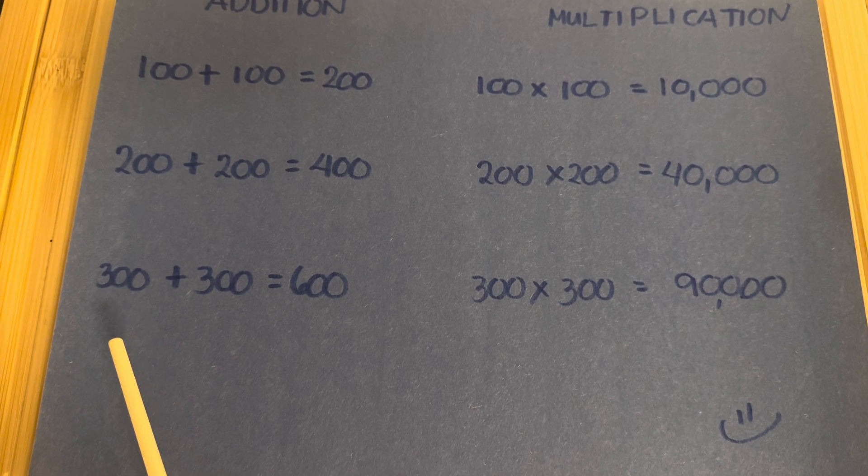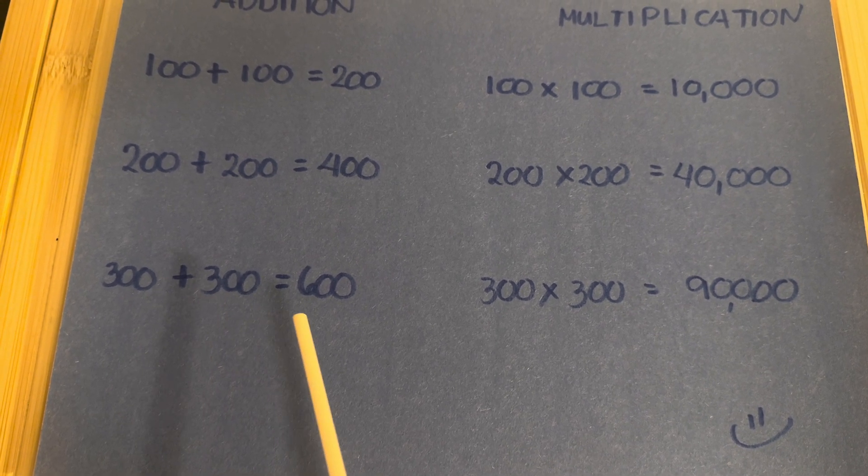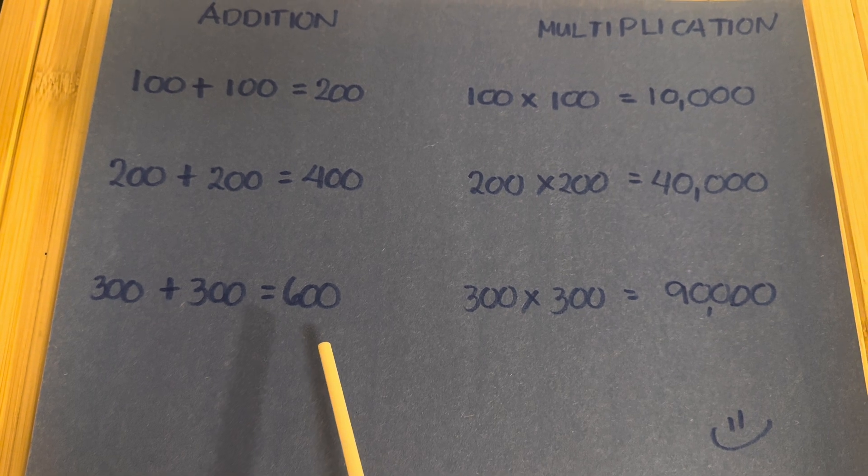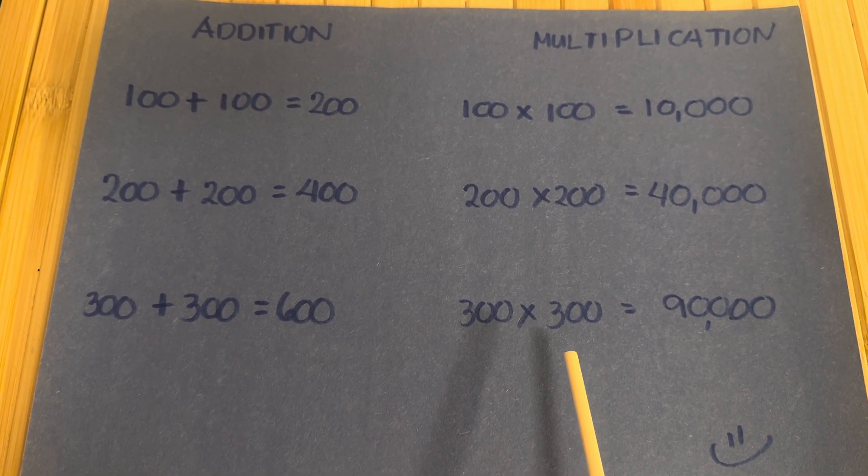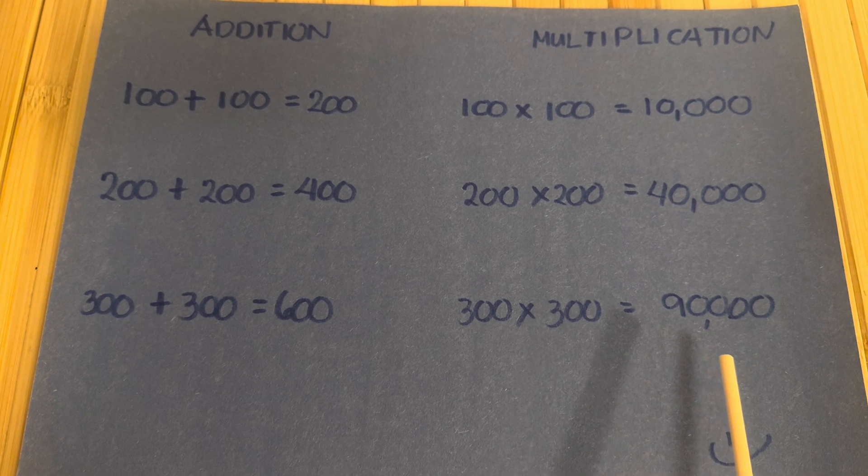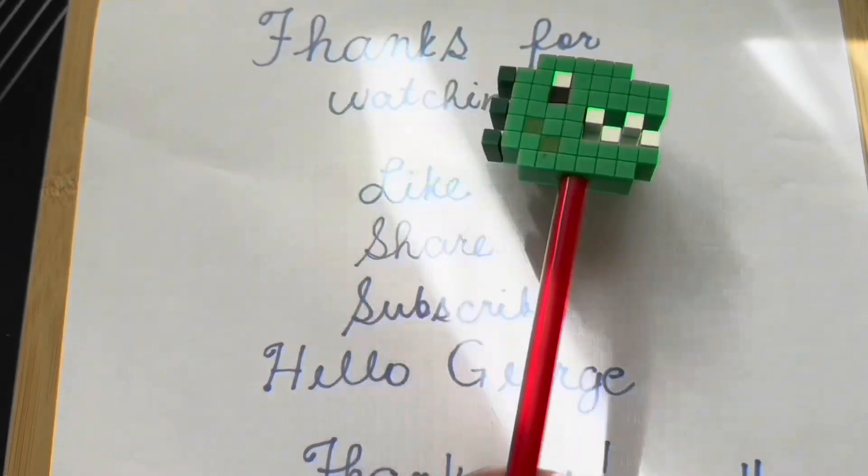And lastly, 300 plus 300 equals 600. 300 times 300 equals 90,000. Thanks for watching.